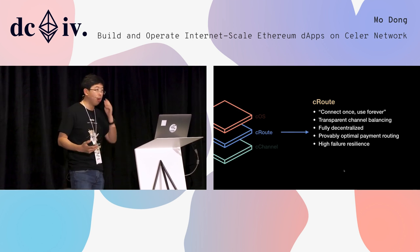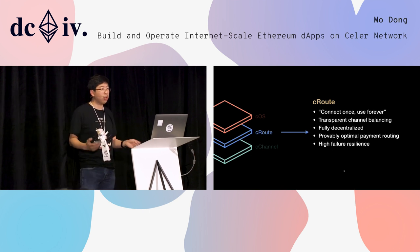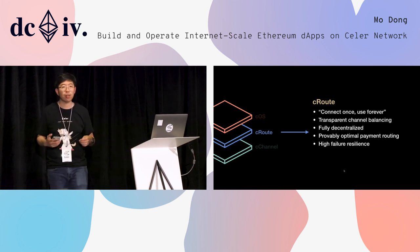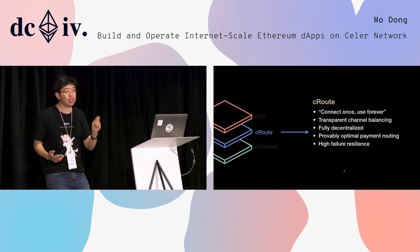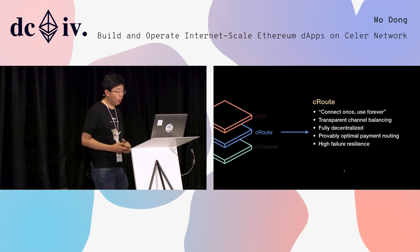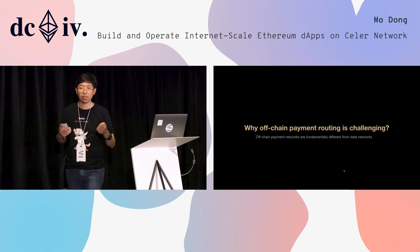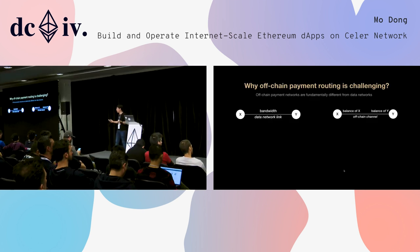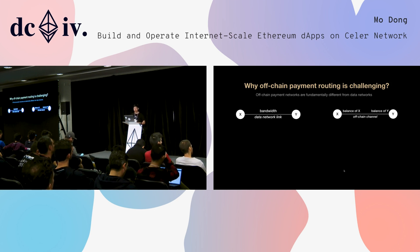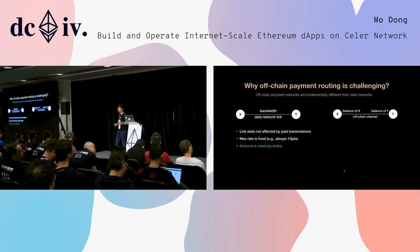The second layer of Celer's technology architecture is called cRoute. The reason we need a routing architecture is because we really want a mechanism to connect to this off-chain state channel network once and use it forever. Why is off-chain payment routing so challenging? The reason is that the state channel network is very different from a data network. For a data network, the entire network is stateless — a 100 megabit per second link stays 100 megabit per second no matter how much data flows through it.